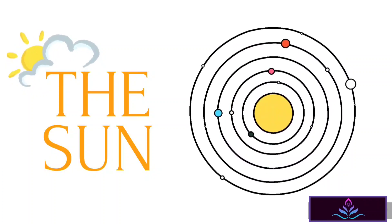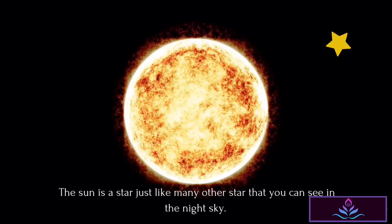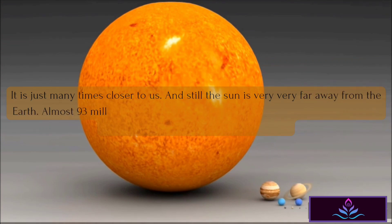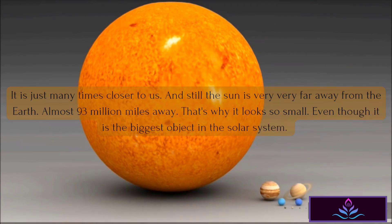Now let's look at the center of the solar system, the Sun. The Sun is a star just like many other stars that you can see in the night sky. It is just many times closer to us, and still the Sun is very far away from the Earth, almost 93 million miles away. That's why it looks so small, even though it is the biggest object in the solar system.